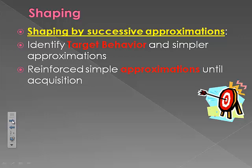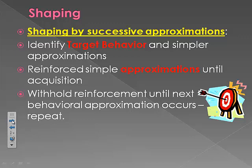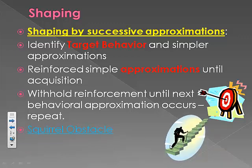We reinforce those behaviors until acquisition has taken place and the rat spends all its time up by that lever. Then we stop reinforcing that and only reinforce when it rears up on its hind legs by the lever. When that behavior is acquired, we stop reinforcing it until the rat actually presses or touches the bar. The rat will eventually bar press and make the association between bar pressing and food pellets. So the target behavior is acquired by reinforcing and withholding these simpler approximations step by step.